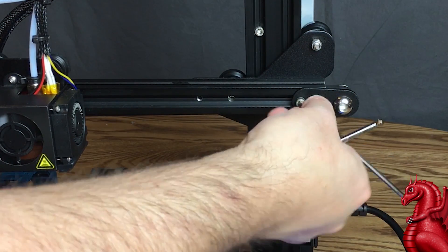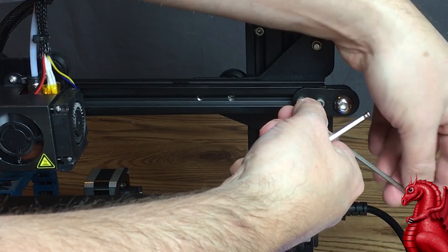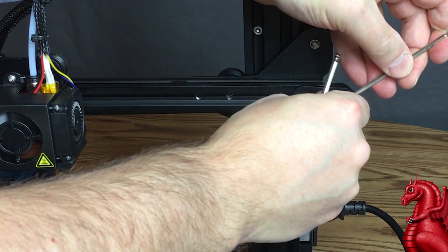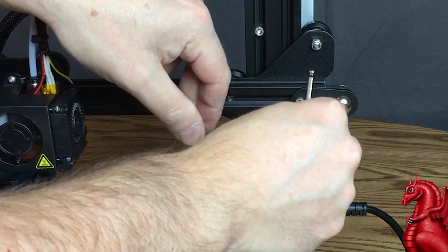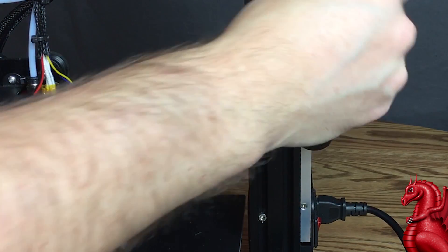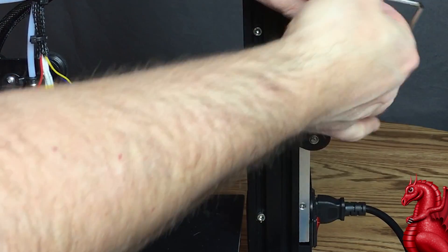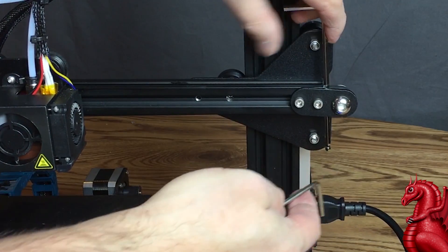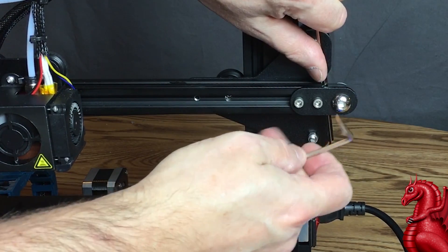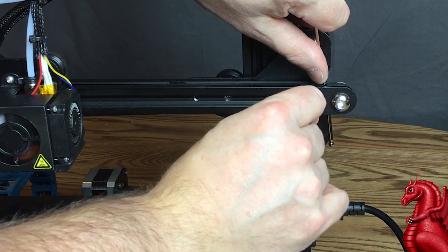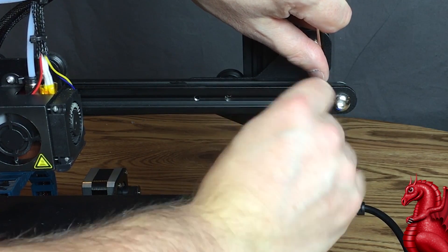All right, to get started, you're going to take the hex key that came with your printer, loosen the two bolts that hold the tensioner in place. Once you've done that, you're going to want to take the largest hex key that came with your printer and slide it down between the tensioner and the x-axis extrusion rail. And then you're going to use this as a lever to apply some force on the tensioner and keep it as far out as possible to keep that belt tight while you tighten those bolts back up on the tensioner.